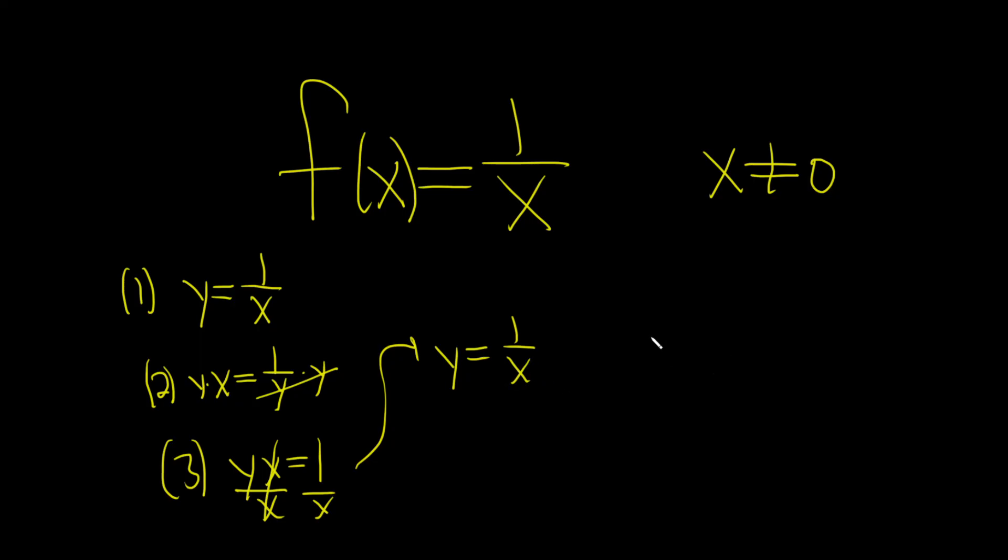And the fourth step is to just rename our function using the proper notation. So f inverse of x is equal to 1 over x.